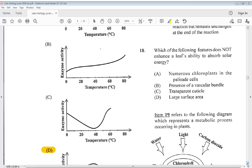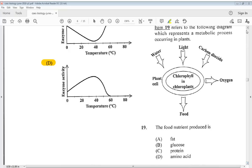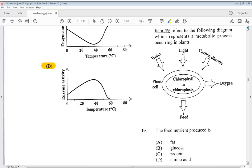Let's go to 18. Which of the following features does not enhance a leaf's ability to absorb solar energy? The answer is B, presence of a vascular bundle. 19. Item 19 refers to the following diagram, which represents a metabolic process occurring in plants. The food nutrient produced is fat, glucose, protein, or amino acid. We know it is B, glucose.